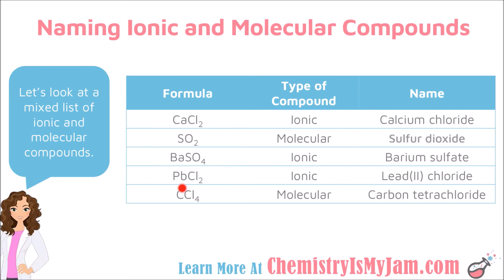In the fourth case, you've got Pb, which is lead, and chlorine. Pb is a metal, so this is an ionic compound. Is there a transition metal, Sn, or Pb? There is — so this is one of those special cases where you need to list the charge of the cation in Roman numerals. Chlorine is in group 17, meaning it has a charge of negative 1, and there are 2 chlorines. So lead must have a charge of plus 2 — lead(II) chloride.